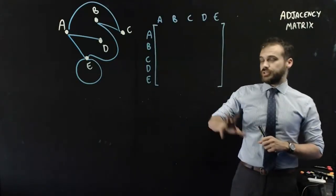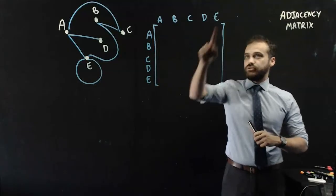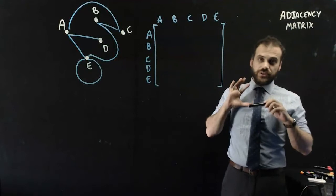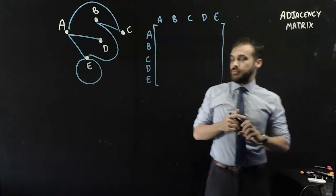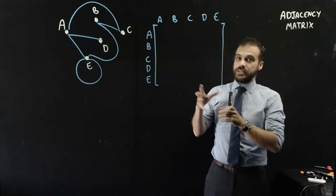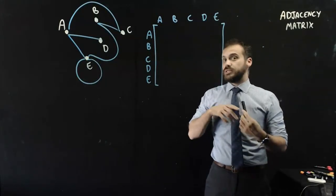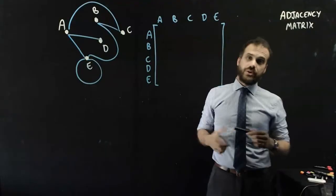Now the process is really simple. We've got this little matrix here, A, B, C, D, E, A, B, C, D, E, and now we're just going to fill it in with 0s and 1s. If two points are connected, we're going to put a 1 at their intersection. If two points aren't connected, we're going to put a 0 at their intersection.